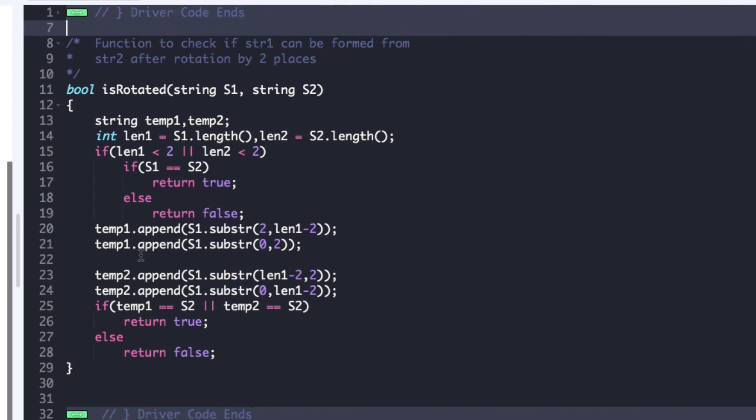Then we create a right rotation by first appending the substring from the third character to the last character and then we append the first two characters. So we get the right rotation which is stored in temp1.